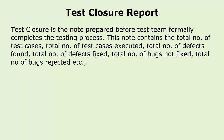Test closure report is a note prepared before the test team formally completes the testing process. This note contains the total number of test cases, total number of test cases executed, total number of defects found, total number of defects fixed, total number of bugs not fixed, total number of bugs rejected, etc.